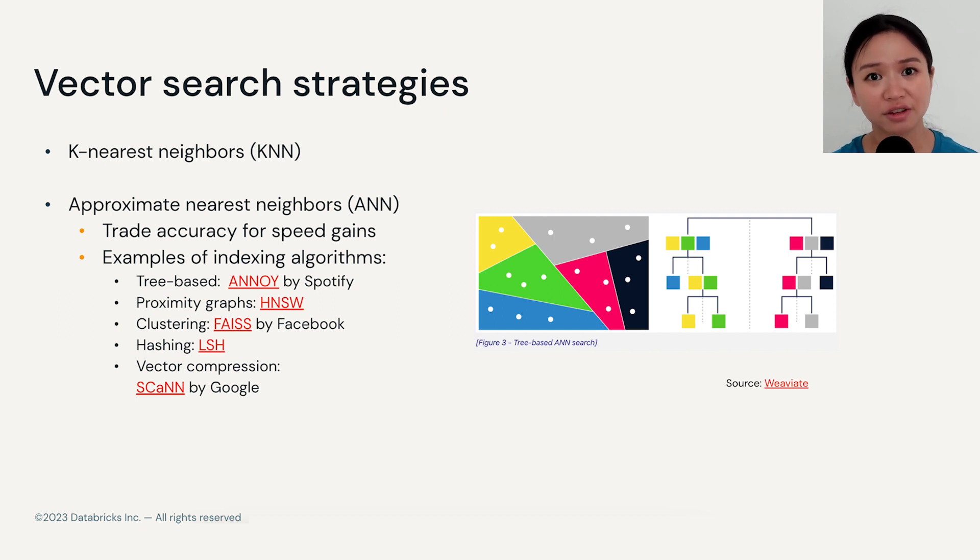Here is a list of common indexing algorithms. We can call them indexing algorithms because the output of these algorithms is a data structure called a vector index. As we mentioned in the earlier segment, a vector index helps you hold all the necessary information to conduct an efficient vector search.